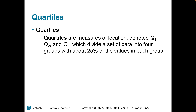That's equivalent to these quartiles — Q1, Q2, Q3. These are the cuts that divide our data set into four groups where we have about 25% of the values in each group, depending on sample size.